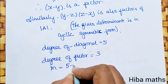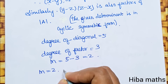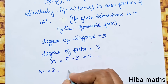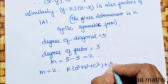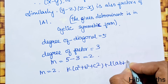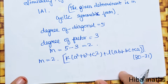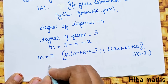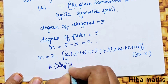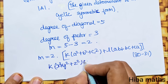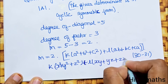The remaining degree is 5 minus 3 equals 2. So we need to include a degree-2 symmetric expression. Therefore we write: k into (x²+y²+z²) plus l into (xy+yz+zx).